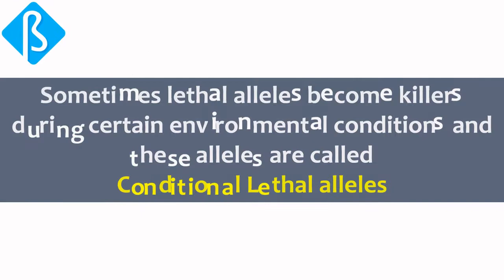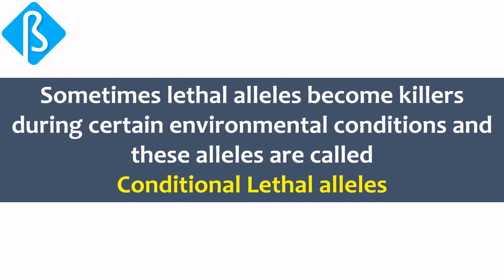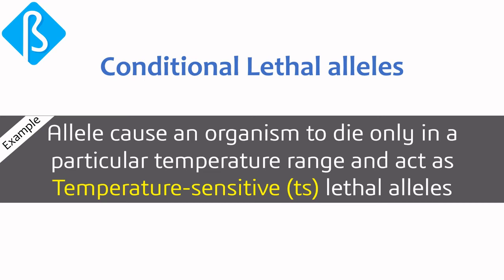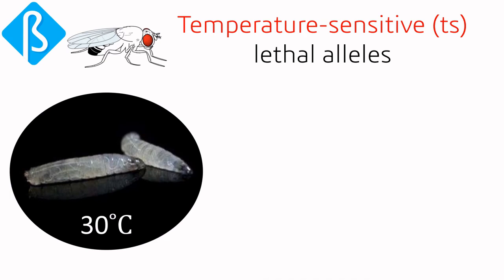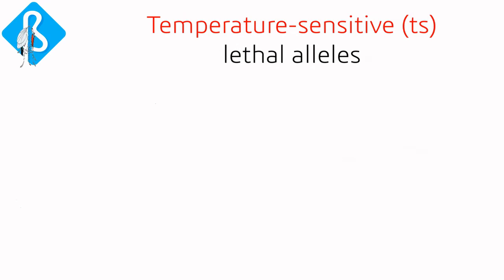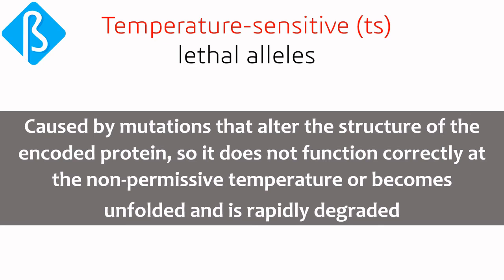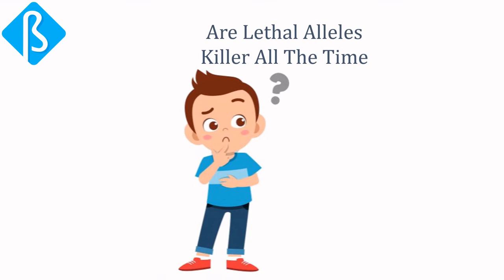Sometimes lethal alleles become killers only under certain environmental conditions — these are called conditional lethal alleles. For example, some cause an organism to die only within a particular temperature range and act as temperature-sensitive lethal alleles. Many organisms, including Drosophila, have temperature-sensitive lethal alleles that allow larvae to develop at high temperature, but the larva survives only if grown at lower temperature. These alleles are typically caused by mutations that alter the structure of the encoded protein so it does not function correctly at the non-permissive temperature or becomes unfolded and is rapidly degraded.